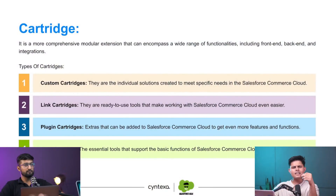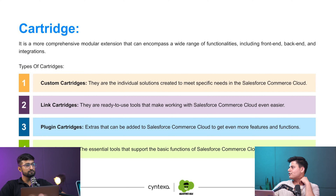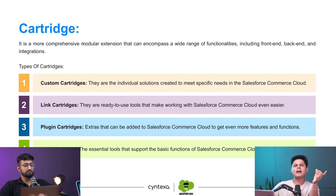So let's talk about the different types of cartridges available. Number one is custom cartridges. These are cartridges which you create for the individual specific needs of your Salesforce Commerce Cloud instance, specifically for a brand. If you want to relate it with Salesforce packages, it's kind of an unmanaged package that you create for Salesforce Commerce because the code is visible — that's why it's unmanaged.